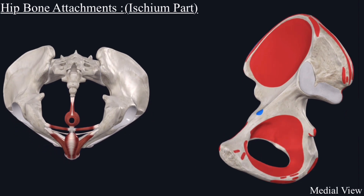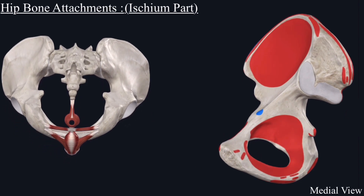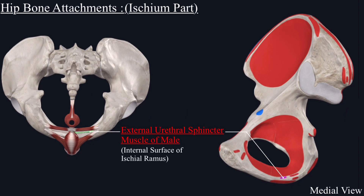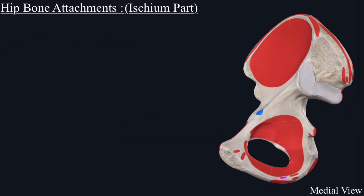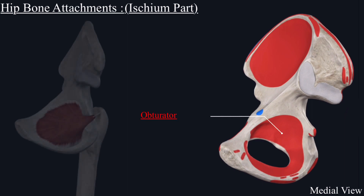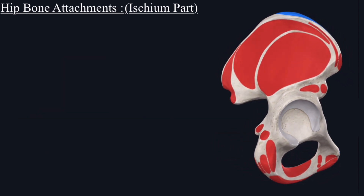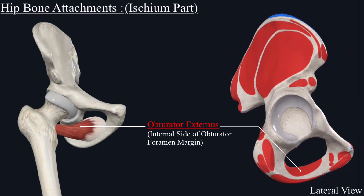Two more muscles originate from the internal surface of the ischial ramus — the deep transverse perineal muscle and the external urethral sphincter muscle of the male. The last two muscles that originate from the hip bone are the obturator internus muscle, which originates from the internal surface of the margin of the obturator foramen, and the obturator externus muscle, which originates from the external surface of the margin of the obturator foramen.